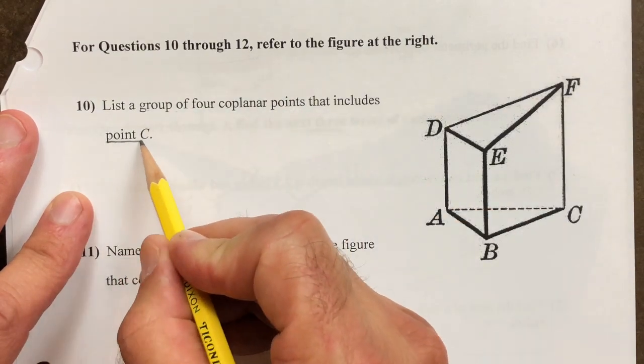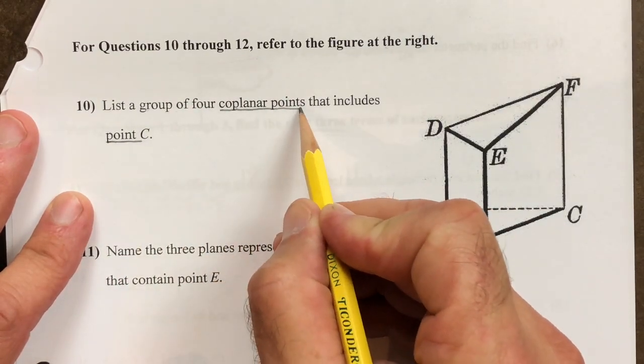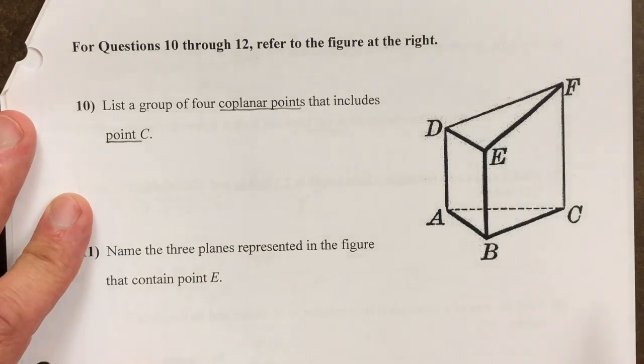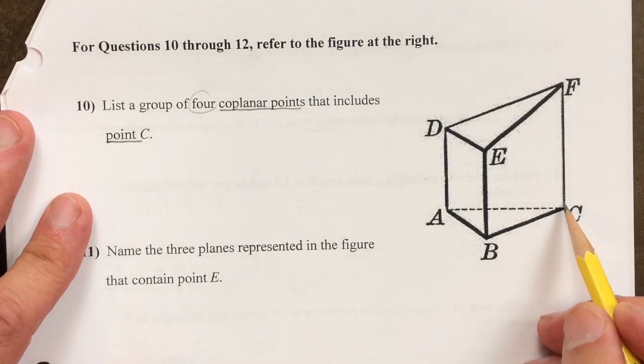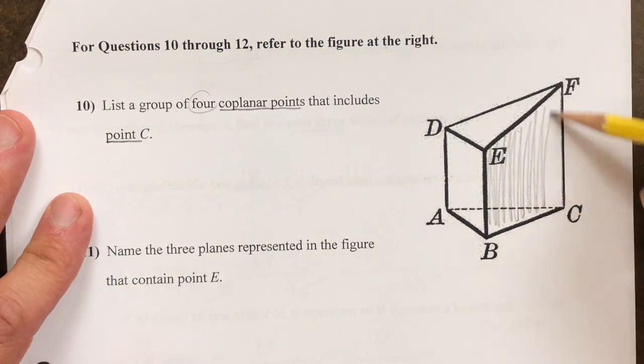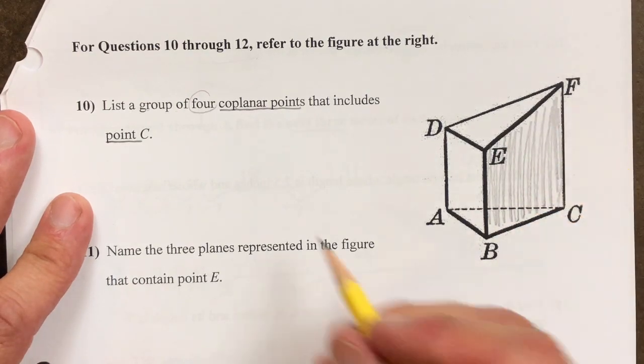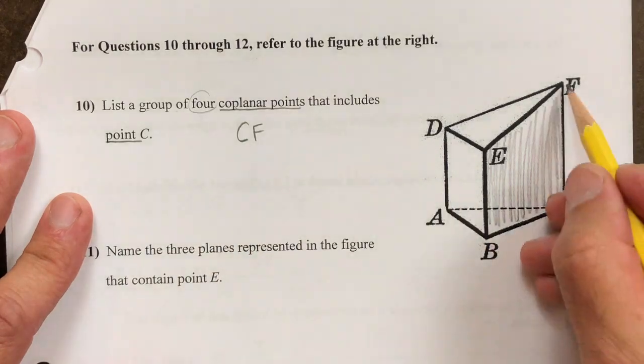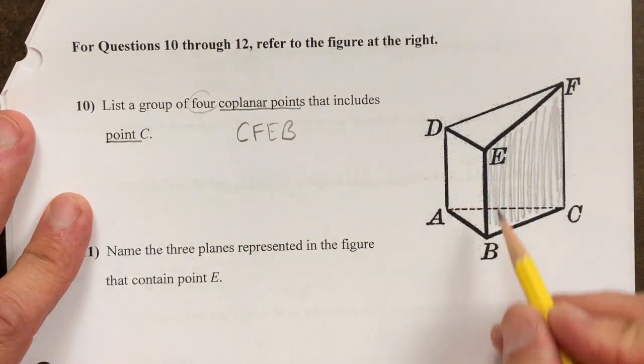Coplanar means the points have to be on the same plane, and in number 10 they have to include point C. So there's a couple of these that would fit that information. First of all, you have the front right plane which is C, F, E, and B.